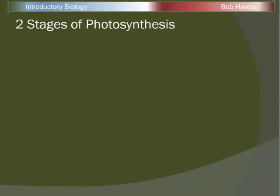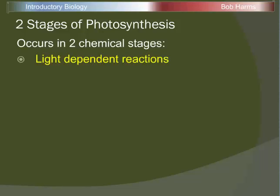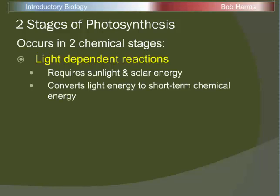If we take a look at our photosynthetic pathway, we can break the metabolic pathway of photosynthesis into two distinct chemical stages. The first stage are the reactions that require solar energy, referred to as the light-dependent reactions because they depend on light as their energy source. They require sunlight — they require those photons to happen. In this set of reactions, plants inside those chloroplasts are going to convert that solar energy into short-term chemical energy.